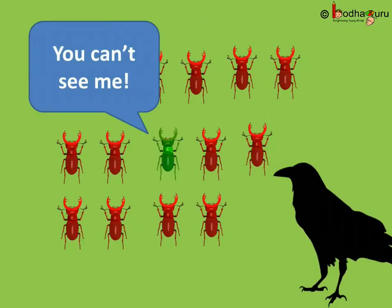In the first case, that is the green beetle, the variation gave the beetle a survival advantage as crows could not spot them on green leaves. This was naturally selected. That's why beetles with that trait flourished and became dominant in the population. Thus, in this case, natural selection was directing evolution in the beetle population.